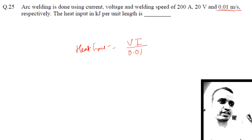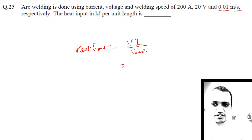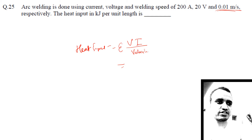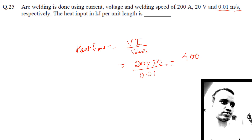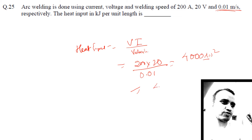Since no efficiency is given, we consider it as 100%. So the heat input = (200 × 20) / 0.01 = 4000 × 10² = 400,000 joules per meter, which equals 400 kilojoules per meter.